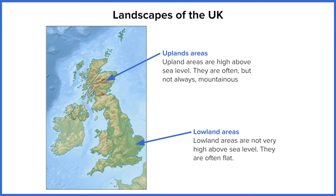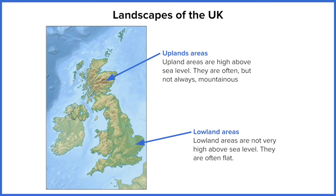We've got a huge portion of very tall mountainous areas in Scotland. We've also got the spine running down the centre into the west of England, which is the Pennines, and then the Lake District as well. Wales on the west is predominantly mountainous, and there are some upland areas in the southwest and surrounding Northern Ireland too. So as a general pattern, our upland areas tend to be north and west.